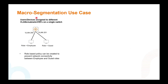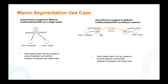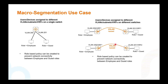Another use case is macro segmentation — different subnets, different VLANs, or even different VRFs. In this example there are two devices with different roles on different VLANs, and you can have a policy that prevents or allows certain types of traffic between them. The same applies across different switches with a VXLAN tunnel between them — different VLANs, same VRF. If you do route leaking between VRFs, you can also have role-based policy effective across VRFs.